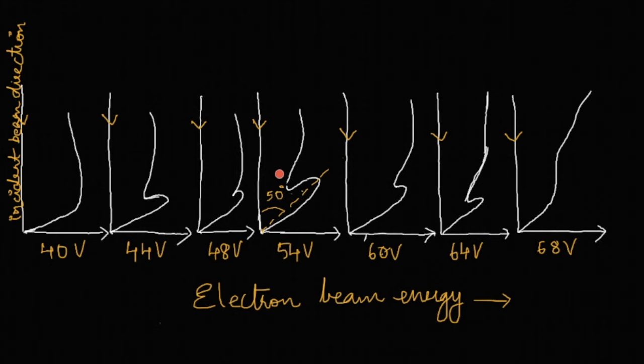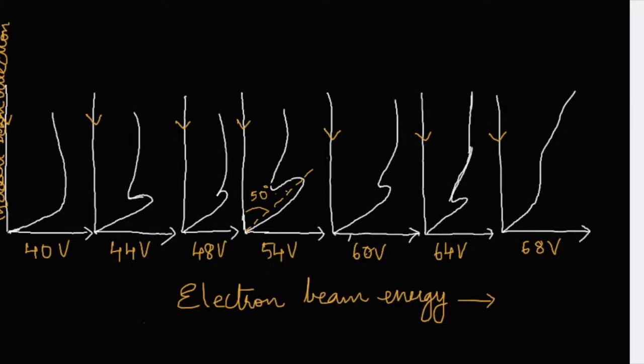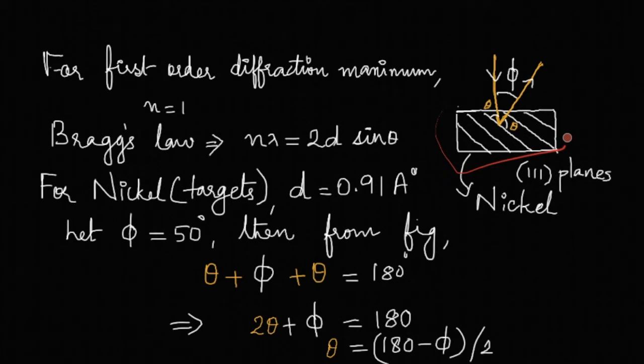This occurrence of this bump can be explained due to the constructive interference of the electron waves scattered in this direction from the atomic planes of the target. In the previous figure, we had a nickel crystal which had atomic planes, and the electrons are scattered from such a nickel plane. You can see this nickel crystal as having 111 plane shown here. According to Bragg's law, that is n lambda equals 2d sin theta. Here we are taking first order diffraction, that is n will be equal to 1, and d is the interplanar distance or spacing which is a constant for each crystal, and that value for nickel is 0.91 angstrom.